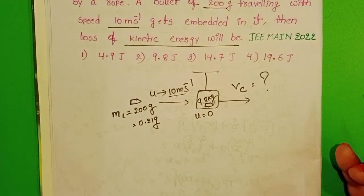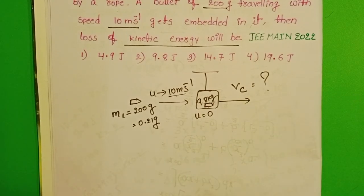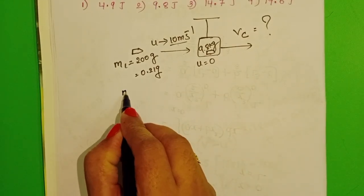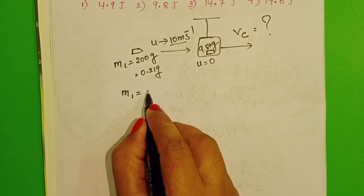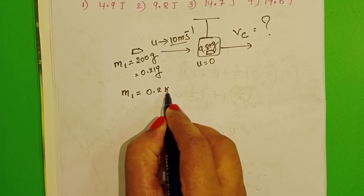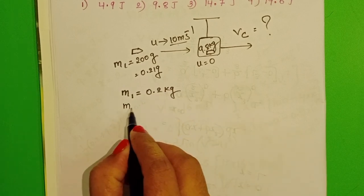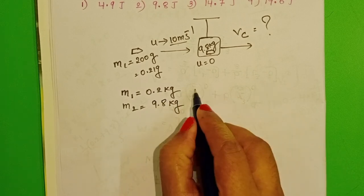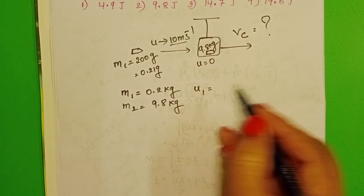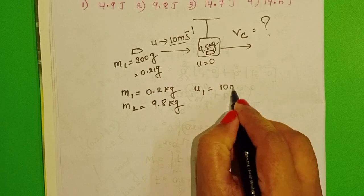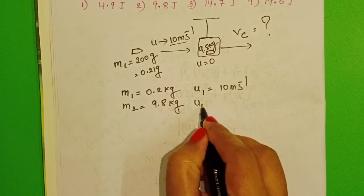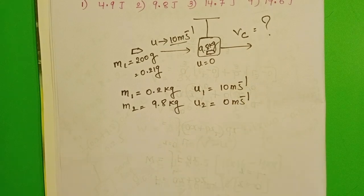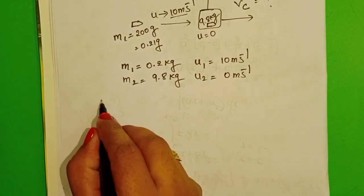We have to find out the change in kinetic energy in this question. Mass of the bullet is 0.2 kg. Mass of the sand bag is 9.8 kg. Initial velocity of the bullet is 10 meters per second. Initial velocity of the sand bag is 0 meters per second.